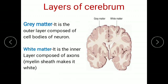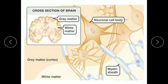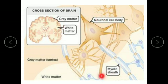Both hemispheres are made up of two layers. The outer layer is of grey matter and the inner layer is of white matter. Grey matter is the outer layer composed of cell bodies of neurons, whereas white matter, which is the inner layer, is composed of axons of the neuron. In this figure, you can see how neurons are arranged in the brain, forming grey and white matter. Grey matter is made up of neuron cell bodies, whereas the white matter inner layer is made up of myelin sheath.